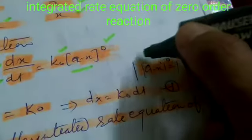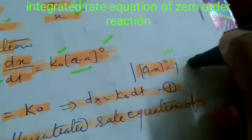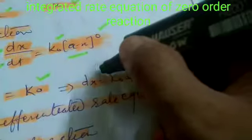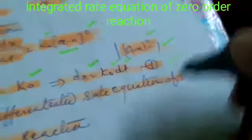Now we get dX upon dT equal to K0. Finally, dX equal to K0 dT, equation 1.